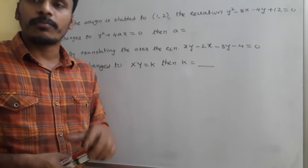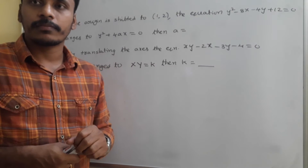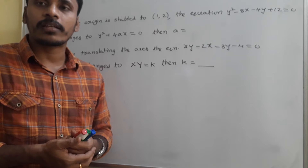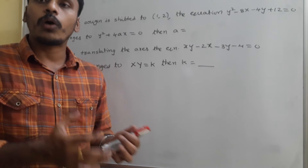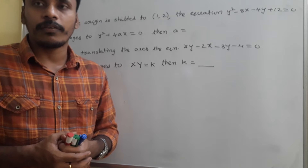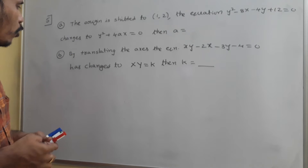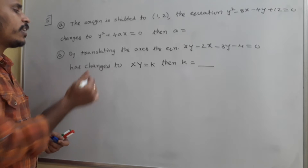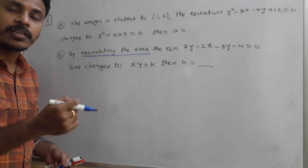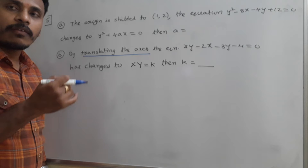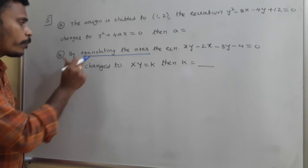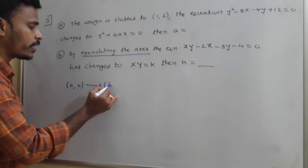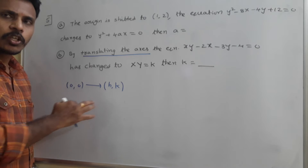In the previous class we discussed about the translation of axis — the need to translate the axis, and if you shift the origin in translation of axis, how the coordinates of a point are changing, how the equations are changing. We are just translating the axis, which simply means shifting the origin without changing the direction of the axis. The origin is shifted to some other point with coordinates h, k — that is the usual notation.